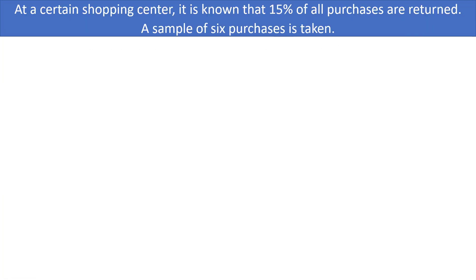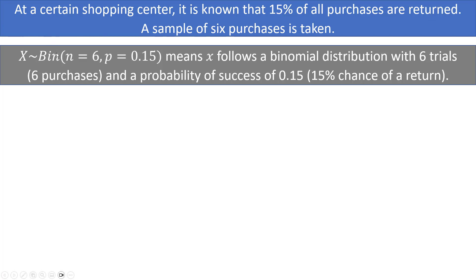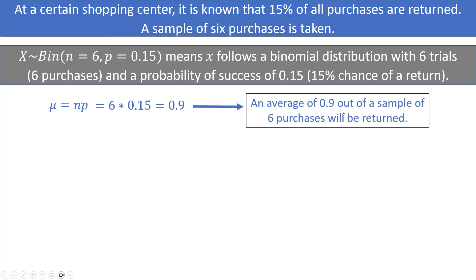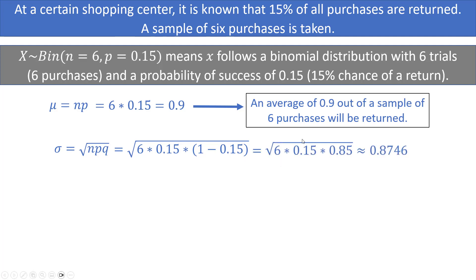At a certain shopping center, 15% of all purchases are returned. We take a sample of size 6. If X represents the number of purchases returned out of 6, then X ~ BIN(6, 0.15). The mean equals n times p: 6 times 0.15 equals 0.9, meaning on average about 0.9 out of 6 purchases will be returned. The standard deviation is the square root of 6 times 0.15 times 0.85, which equals approximately 0.8746.